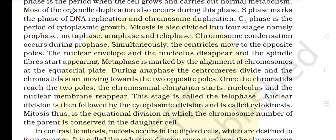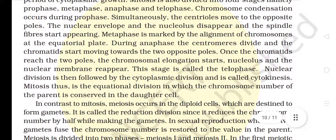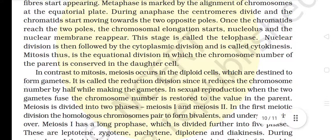Chromosome condensation occurs during prophase. Simultaneously, the centrioles move to the opposite poles. The nuclear envelope and the nucleolus disappear and the spindle fibers start appearing. Metaphase is marked by the alignment of chromosomes at the equatorial plate. During anaphase, the centromeres divide and the chromatids start moving towards the two opposite poles. Once the chromatids reach the two poles, chromosomal elongation starts, and the nucleolus and the nuclear membrane reappear.